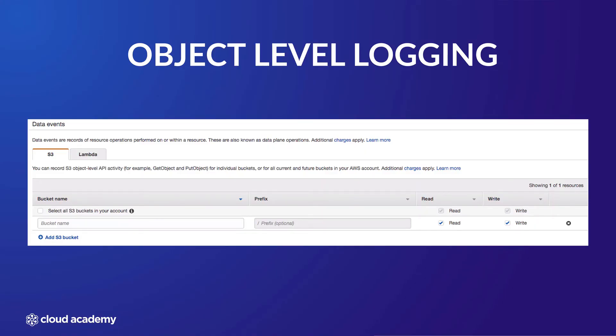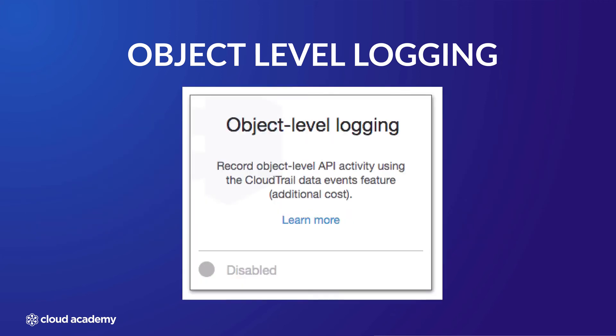Capturing S3 data events can be configured in two ways. Firstly, if you want to capture data events for all or some of your S3 buckets, you can configure this from within one of your trails using the AWS CloudTrail console itself as shown here. Secondly, if it's not already enabled via AWS CloudTrail for your bucket, you can configure it at the bucket level using the properties tab.